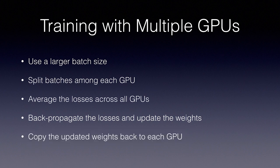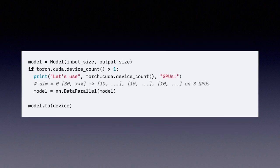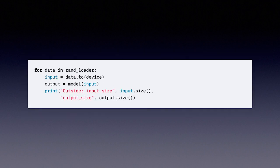In PyTorch, this is very simple. Let's look at some basic code from the docs. Here we've just got a standard model with a fully connected layer. Notice every forward pass, we're going to print some information to see what's going on. The input size is 5, the output size is 2, and the dummy data is in batches of 30. If we detect multiple GPUs, all we need to do is wrap the model with a model called nn.data.parallel. This will automatically split batches evenly across all available devices. Now we just run the input through the model as normal to get the output which has been conveniently recombined from each GPU.